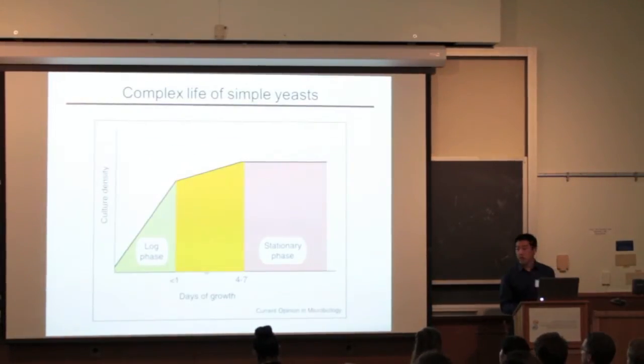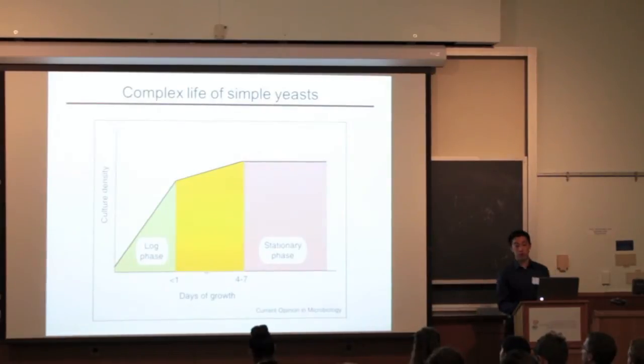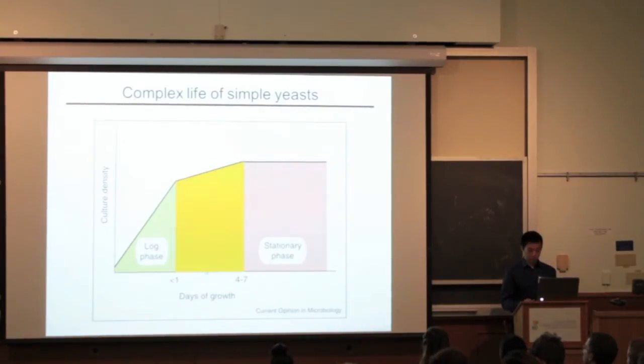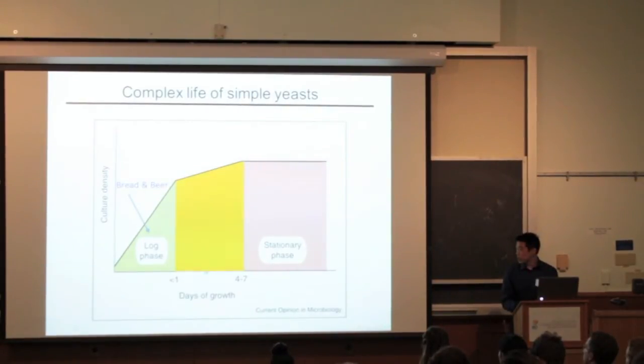In the laboratory, yeast cells have two phases of growth. Logarithmic phase is when the yeast are fermenting the sugar, dividing, and turning it into ethanol. This is an important process where bread and beer are made.